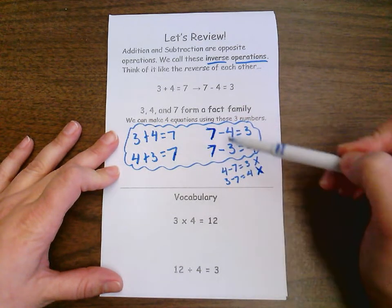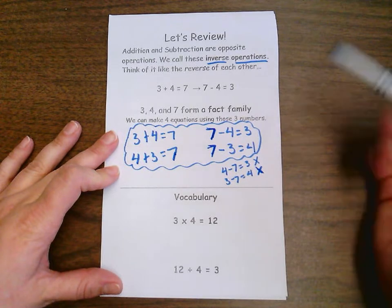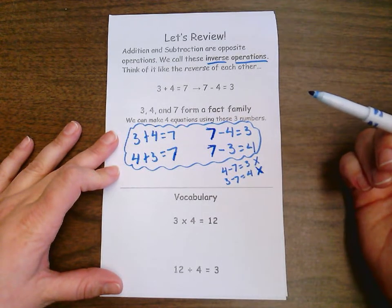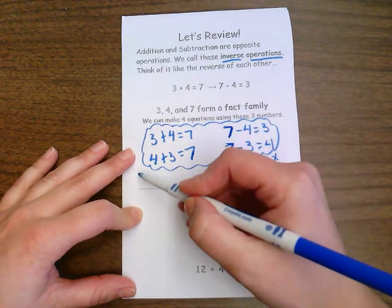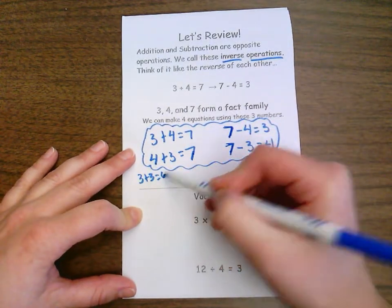Most of the time you will have four equations in a fact family. There are times where you will only have two equations. Let's take a look at something that would happen with that. For example, three plus three equals six.